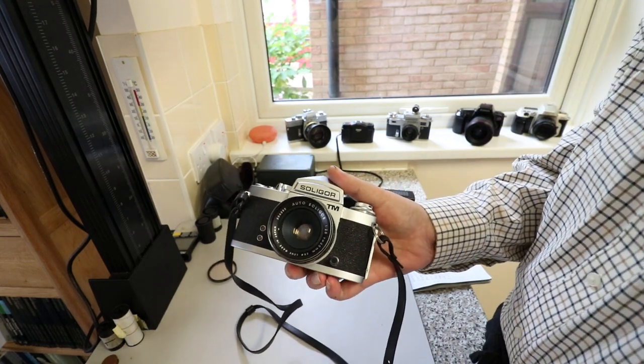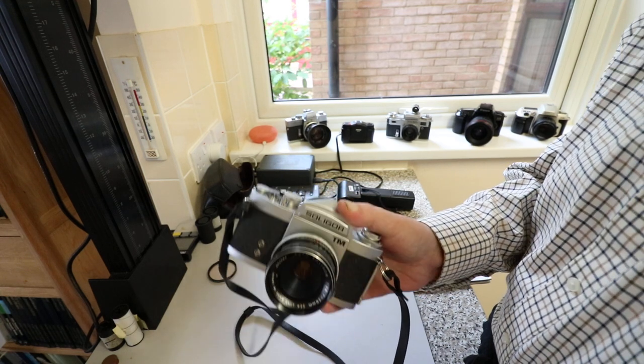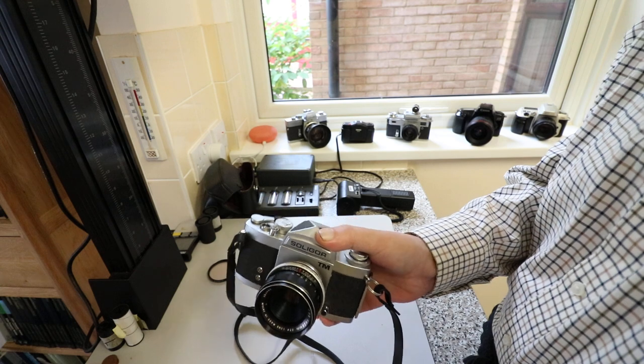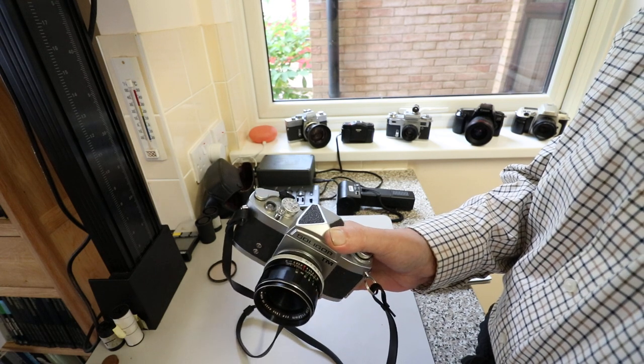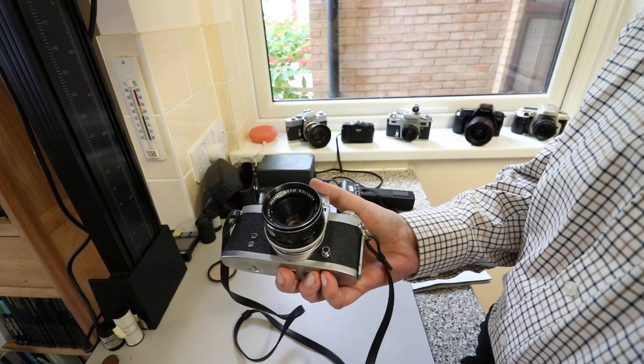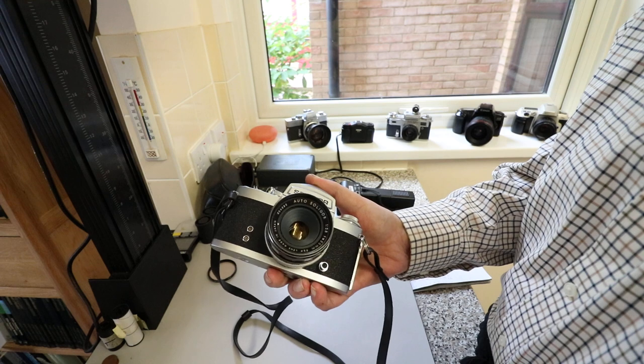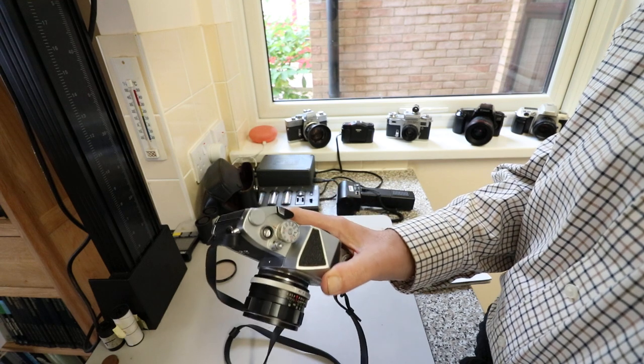1974 was when the Olympus OM-2 came out, another aperture priority camera. The Nikomat EL was around, another electronically controlled shutter. The smaller companies just couldn't compete, so they gave up. There's no money to be made in making old solid cameras.